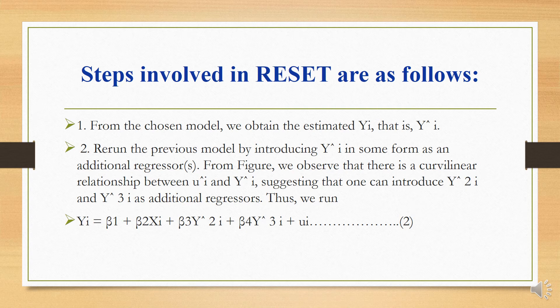Number 2: Rerun the previous model by introducing y hat i in some form as an additional regressor. From the previous figure, we observe that there is a curvilinear relationship between mu i hat and y i hat, suggesting that one can introduce y hat i squared and y hat i cubed as additional regressors. Thus we run: yi equals beta 1 plus beta 2 xi plus beta 3 y hat squared plus beta 4 y hat cubed plus mu i. This is model 2 that we are going to estimate.